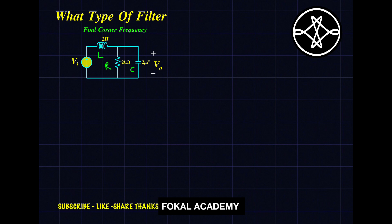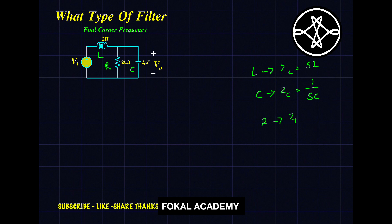First of all I want to find the output voltage across the capacitor for finding the transfer function. To find the voltage across the capacitor, convert these elements into the frequency domain, because reactive components are there. For inductor, the impedance is SL; for capacitor, the impedance is 1/SC; and for resistor, the impedance is R only. So it becomes 1/SC, and here SL and R.